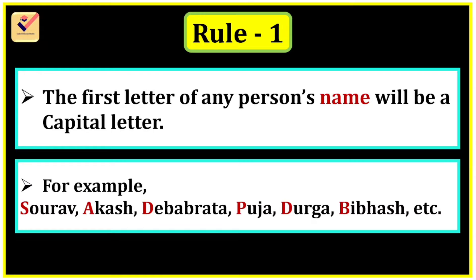In the name Saurav, the first letter S is capital. In the name Akash, the first letter A is capital. In Devabrath, the first letter D is capital. In the name Puja, the first letter P is capital. In Durga, the first letter D is capital. In Vibhash, the first letter B is capital.